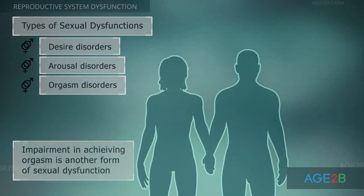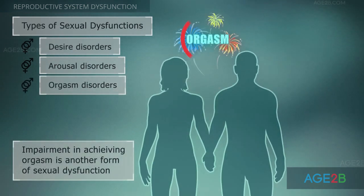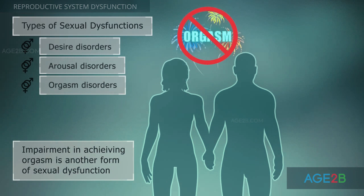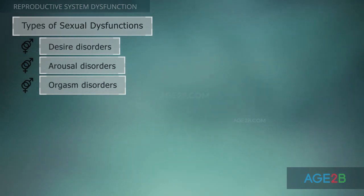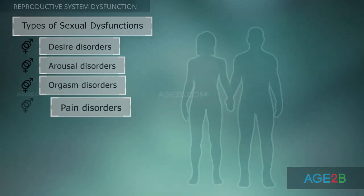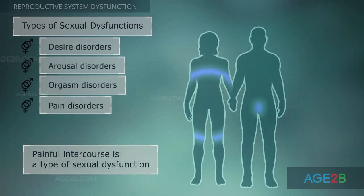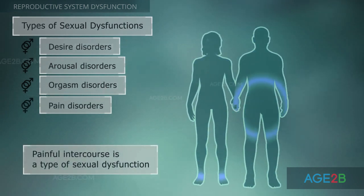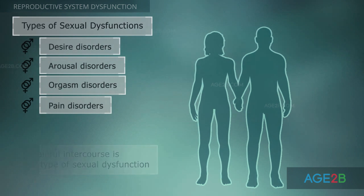Persistent delay or complete absence of orgasm forms the third group of sexual dysfunctions. Pain or any other major discomfort during intercourse forms the fourth group of sexual dysfunctions.